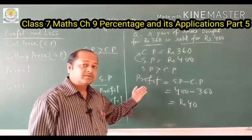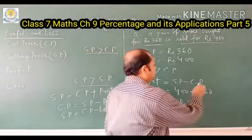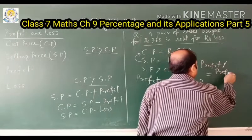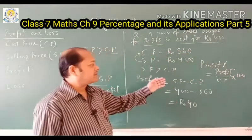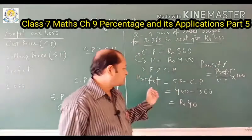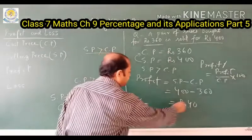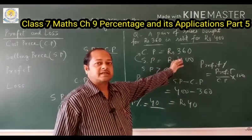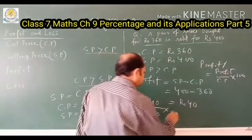Now we will see what is profit percentage. Whenever you know the profit, you can easily calculate the profit percentage. The formula is: Profit Percentage = (Profit ÷ Cost Price) × 100. In this case, Profit Percentage = (40 ÷ 360) × 100.